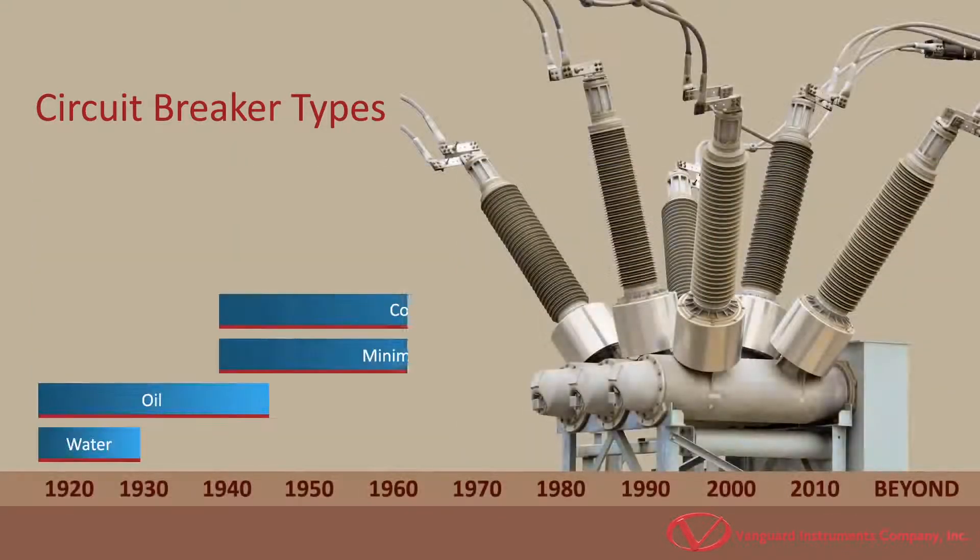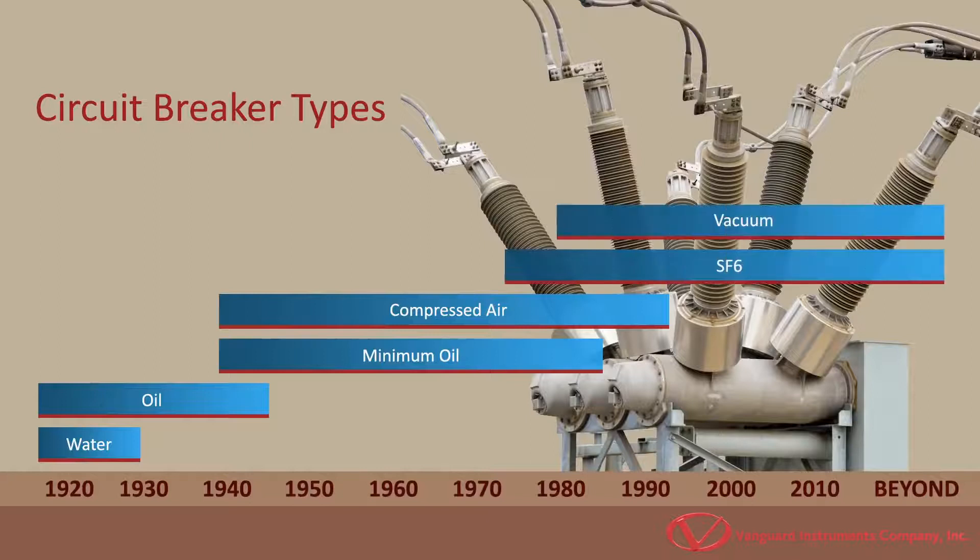This timeline shows the popularity of each breaker type over the years. Most breakers today are either vacuum or SF6 breakers due to their smaller size.